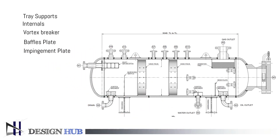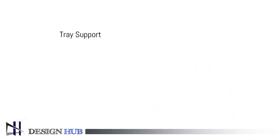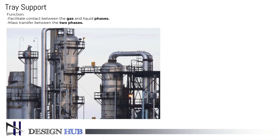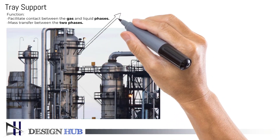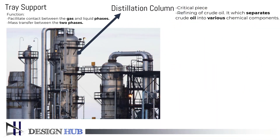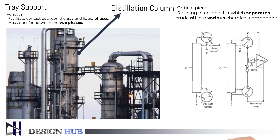Now, let us see about tray support. The function of the tray is to facilitate contact between the gas and liquid phases, and allow mass transfer between the two phases. The distillation column is an important piece in the refining of crude oil. It separates crude oil into various chemical components based on the difference in volatility.